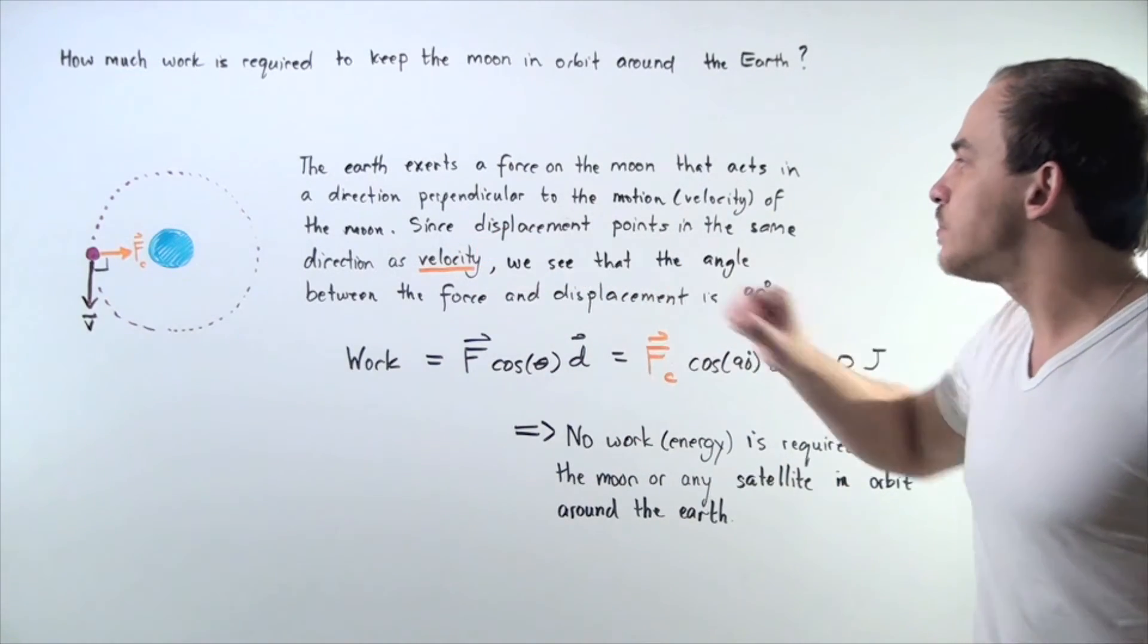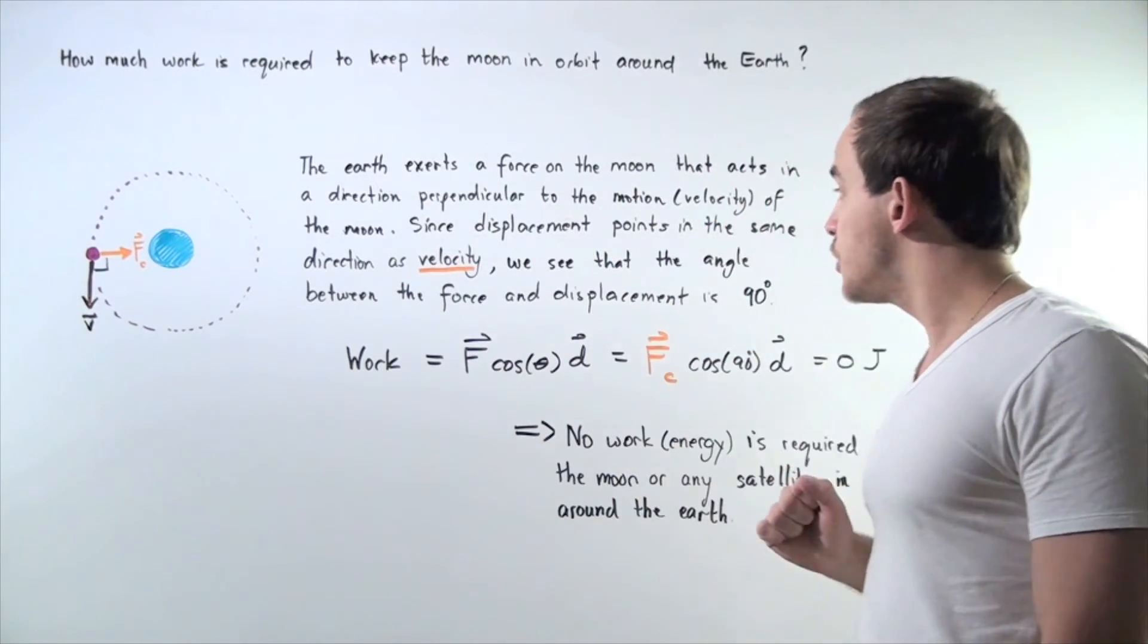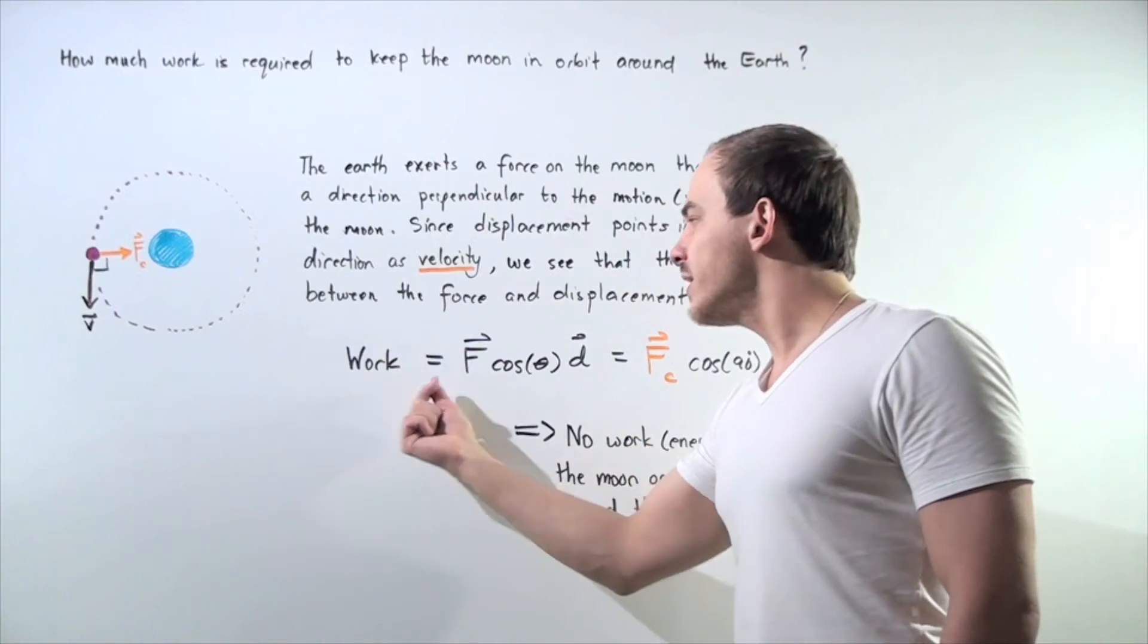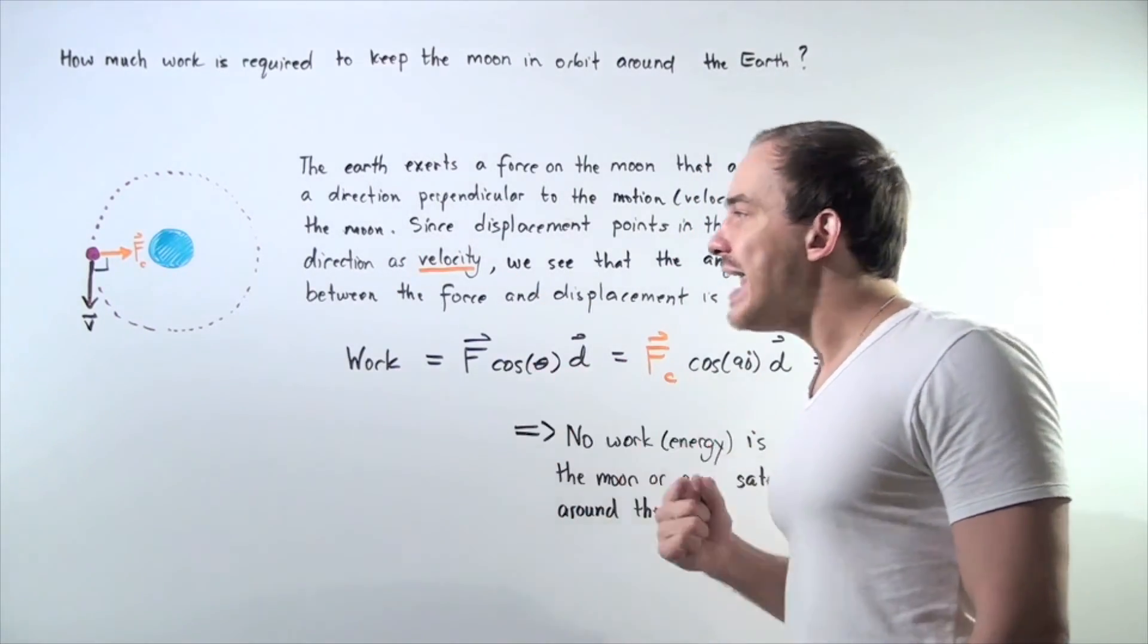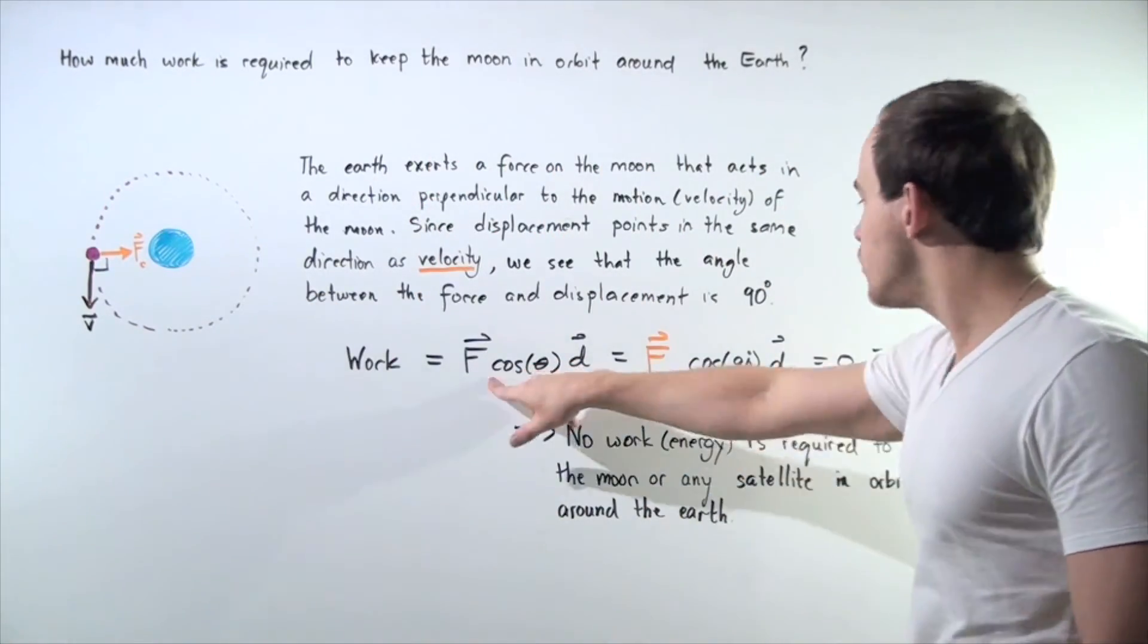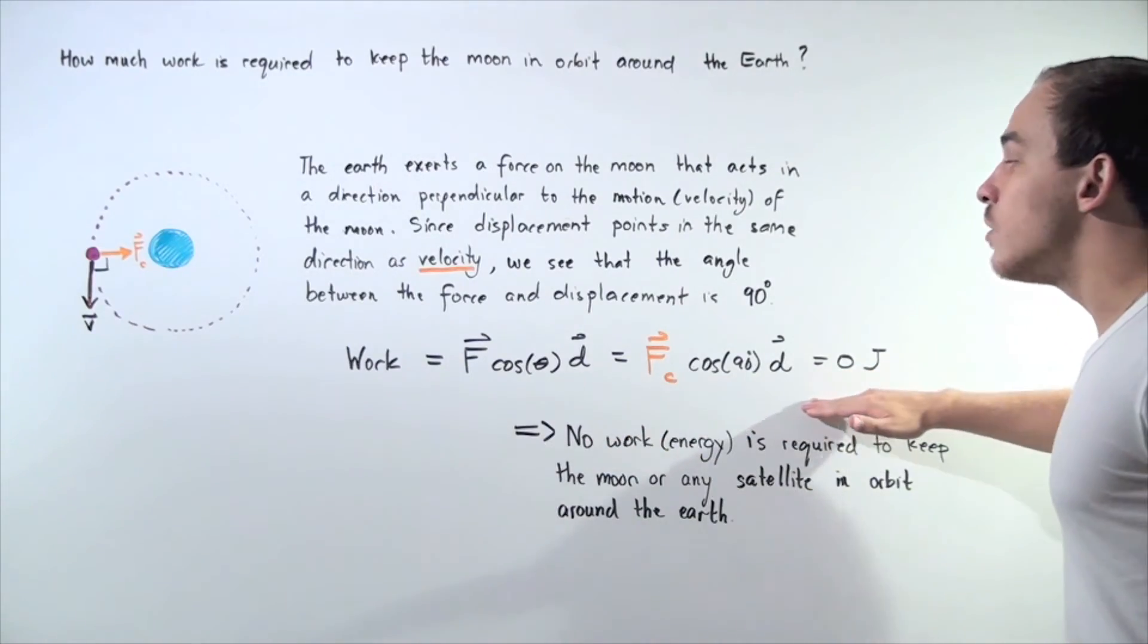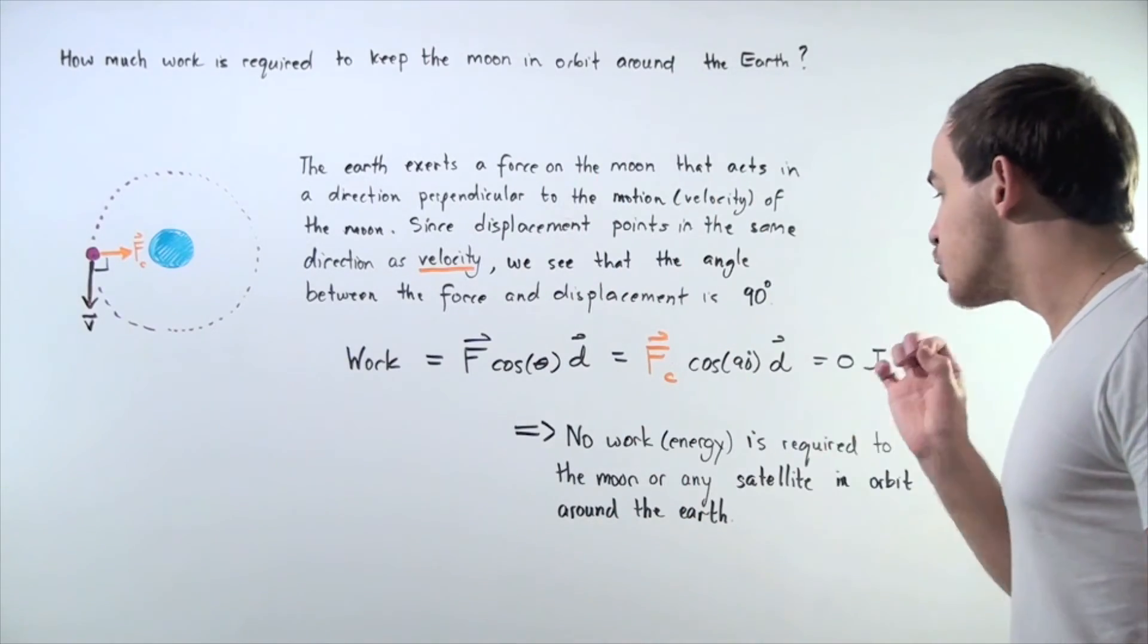Since displacement points in the same direction as velocity by definition, we see that the angle between the force and displacement is 90 degrees. So work is equal to force acting on the object multiplied by the angle between displacement and the force, the cosine of that angle which is cosine 90, times our displacement. And because cosine 90 is zero, the amount of work done by the earth on the moon is zero.